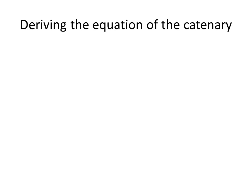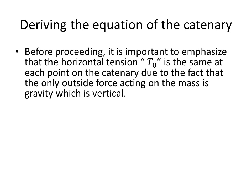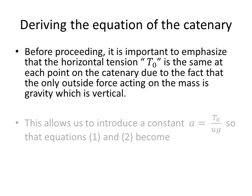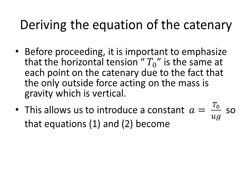Having established the physics aspect of this problem, we're now ready to get into the derivation of the equation. We need to emphasize again that the horizontal vector force or tension at point A, which is indicated by the symbol T knot, is the same at each point on the catenary due to the fact that the only outside force acting on the mass is gravity, which is a vertical force.